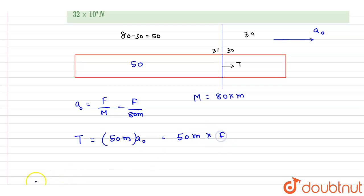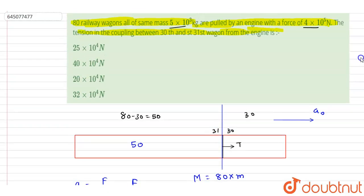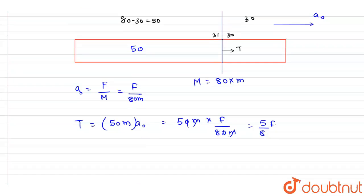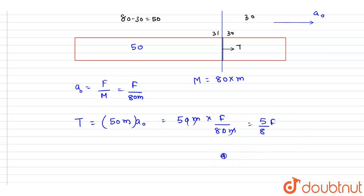You can put the value of acceleration. F is also given in the question, so this M will get cancelled out. It will be 5/8 F. F is 4 × 10⁵, so I will write down 40 × 10⁴ × 5/8. This will get cancelled out by 5.